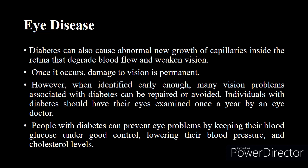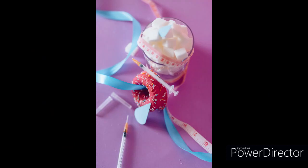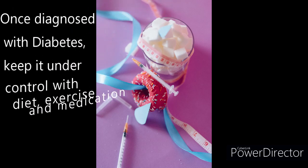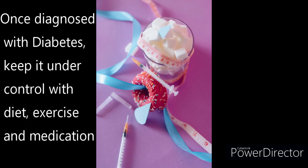However, when identified early enough, many vision problems associated with diabetes can be repaired or avoided. Individuals with diabetes should have their eyes examined once a year by an eye doctor, and can prevent eye problems by keeping their blood glucose under good control. This is why once diabetes is diagnosed, it is always better to keep it under control — if not, it can lead to further acute and chronic complications that are very difficult to reverse, including lowering of blood pressure and cholesterol levels.